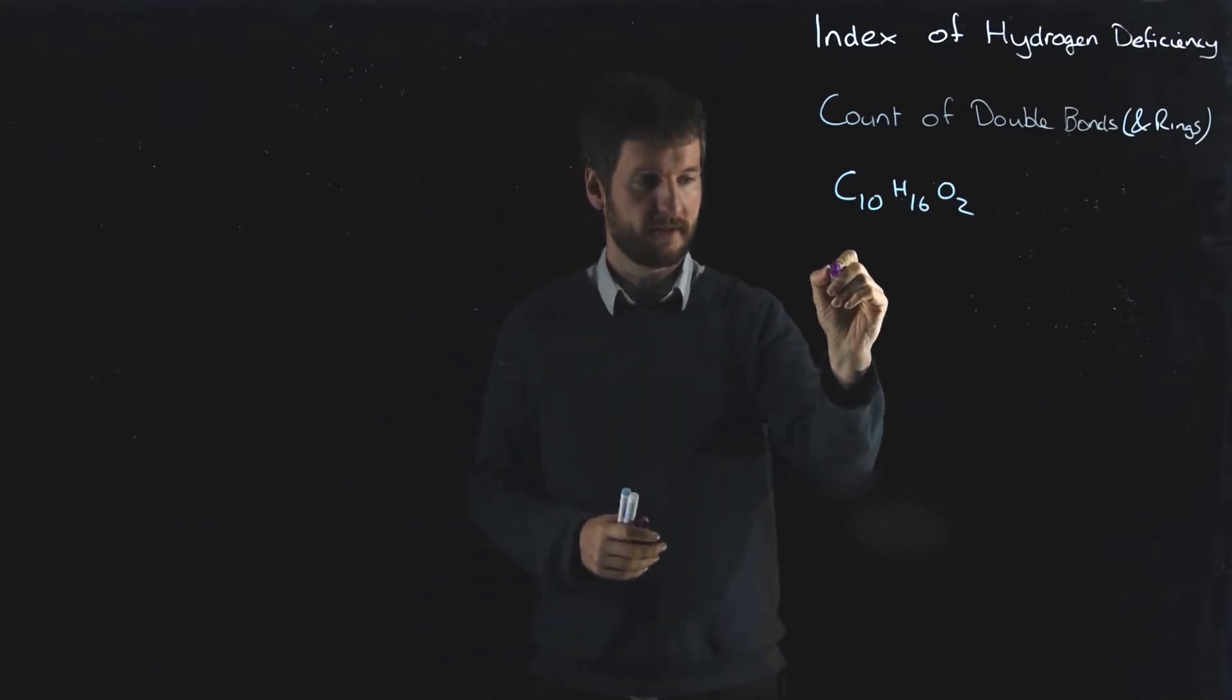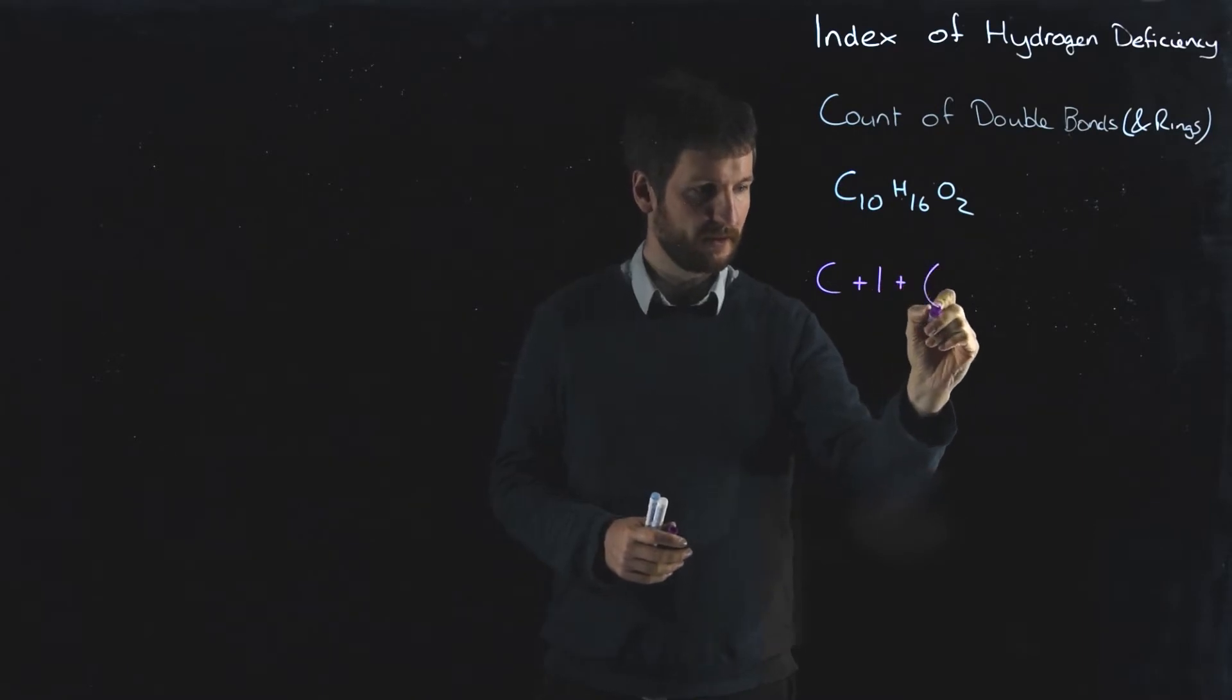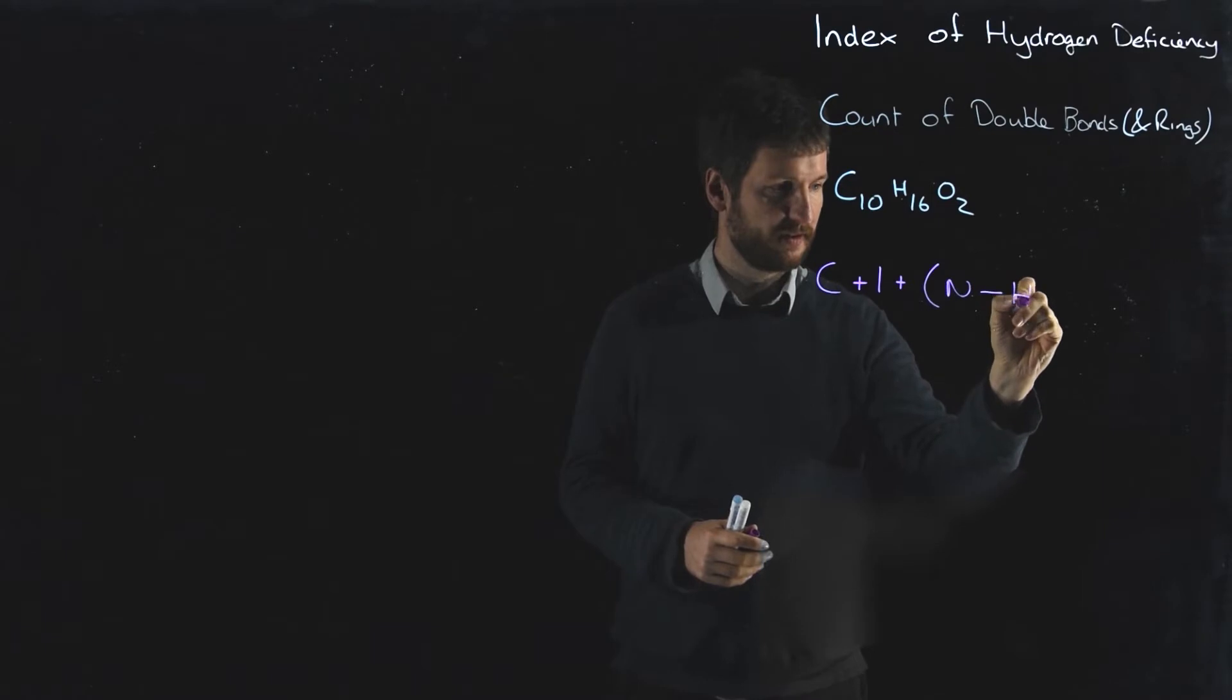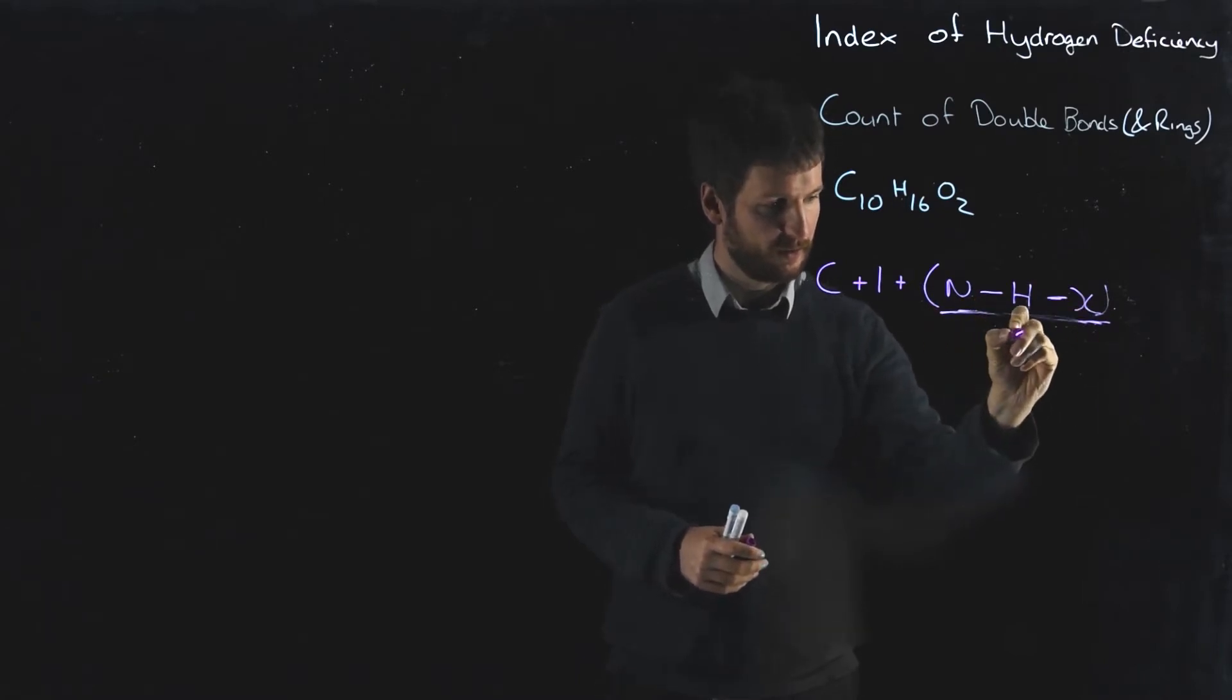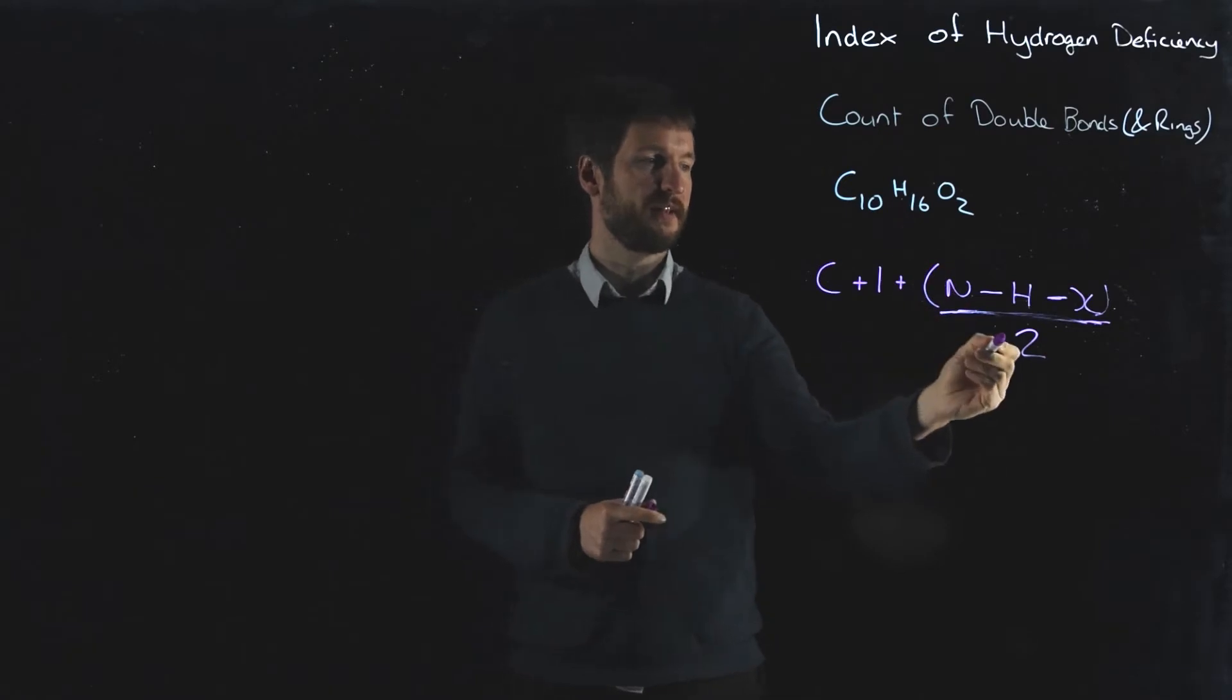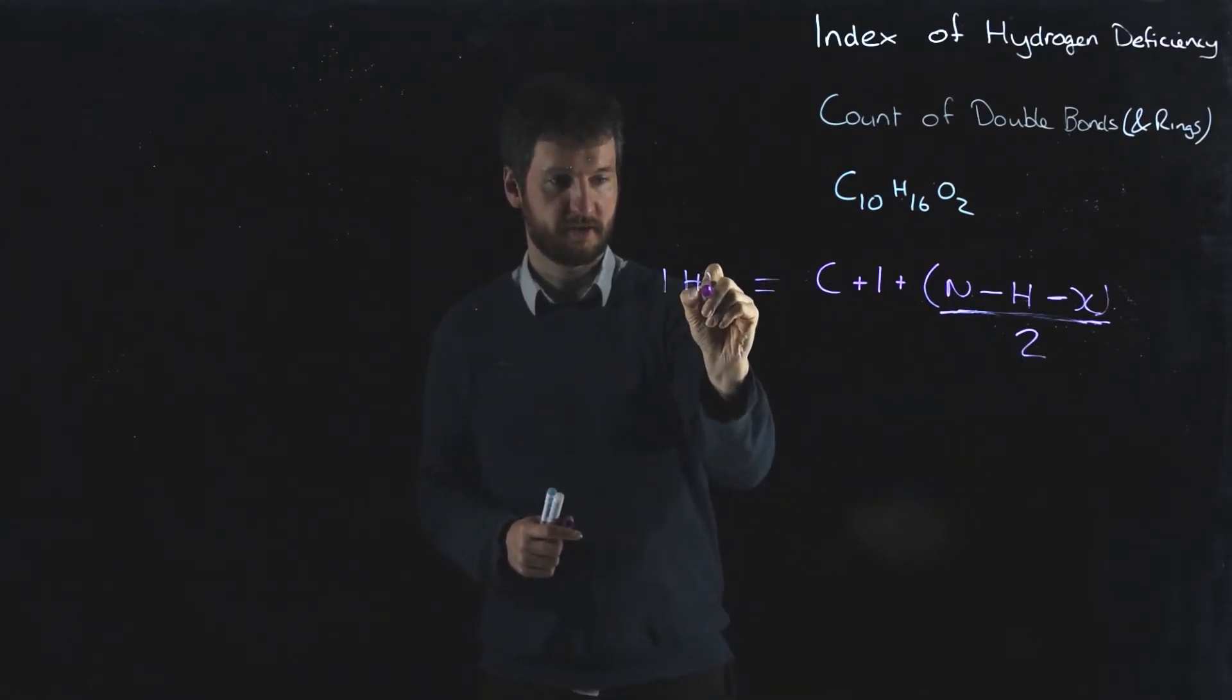The formula that we're going to use is: the number of carbons plus one, plus the number of nitrogens, minus the number of hydrogens, minus the number of halogens, all divided by two. If we put our numbers into this, we'll get back our index of hydrogen deficiency.